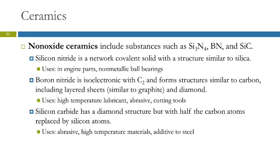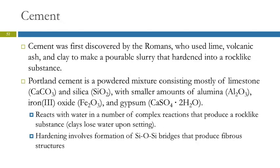Silicon carbide has the same structure as diamond but is half silicon and half carbon. It's also used as an abrasive, in high-temperature materials, and as an additive to steel to change the qualities of the steel. So, those are ceramics.